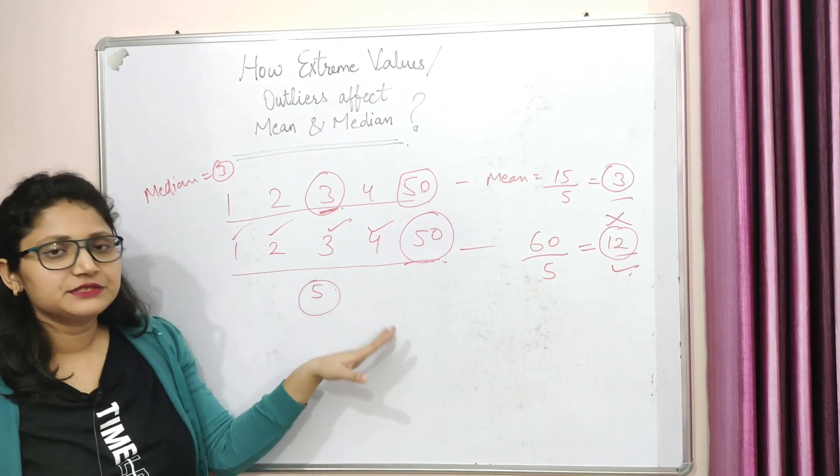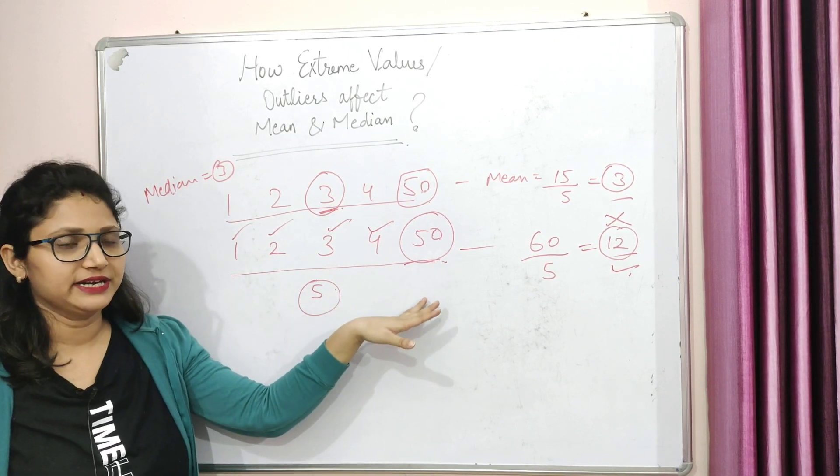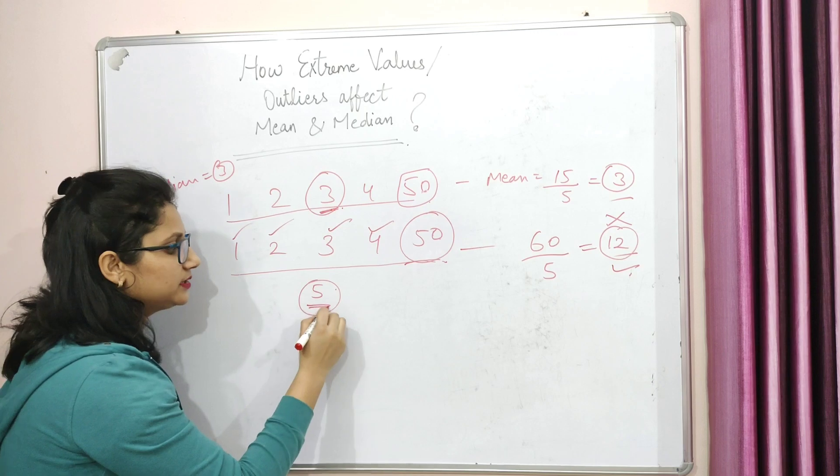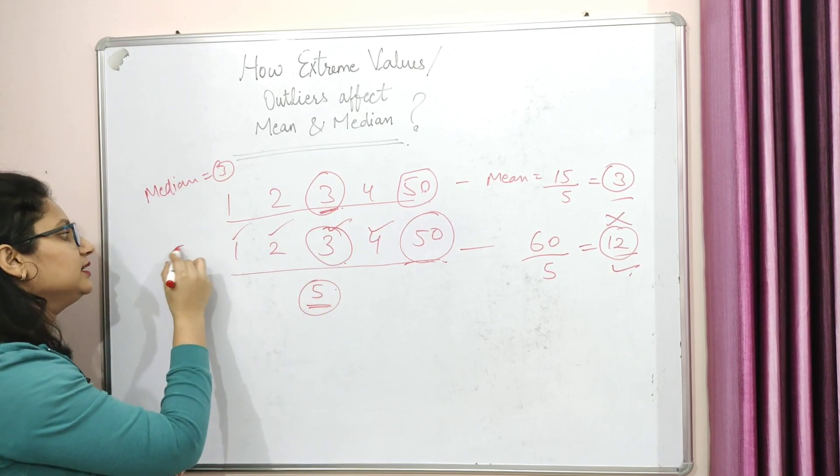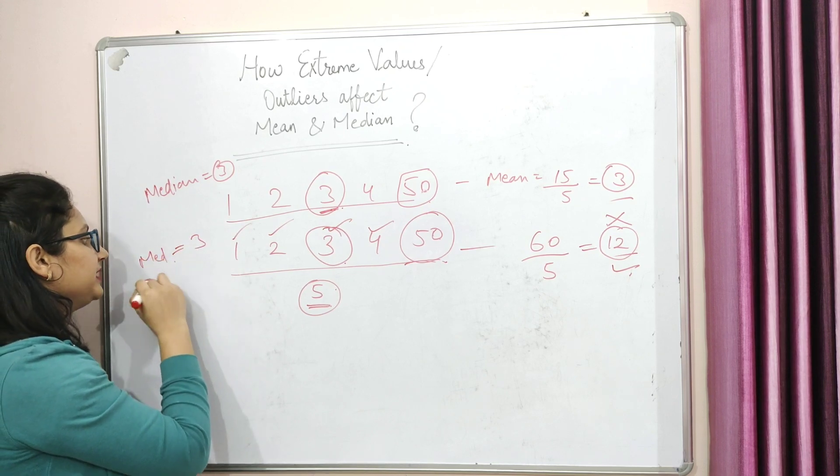Okay. And now in the changed data set, where we have added extreme values, then you also have total data items 5. So if you remove the median from here, then the third item will be your median, which is again 3. So here the median is your median.